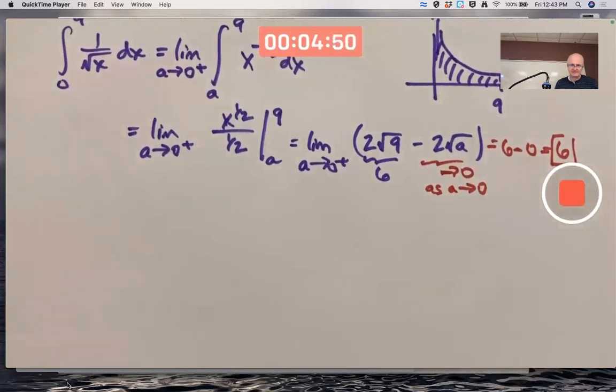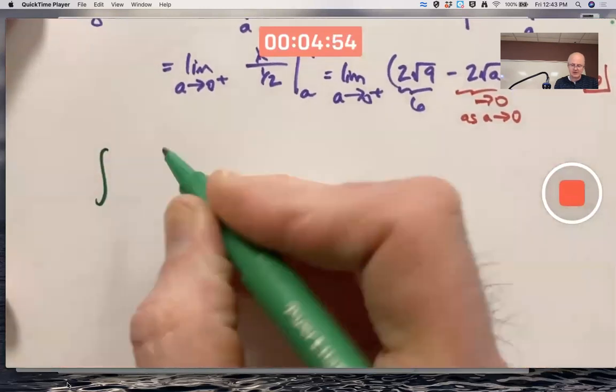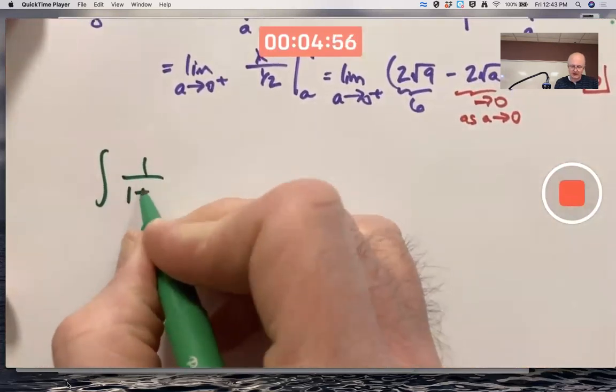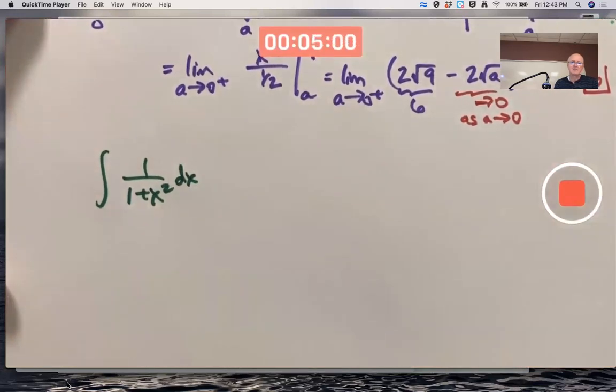Here's another example. We're going to integrate 1 over 1 plus x squared. That function has no vertical asymptotes for real values of x. I could certainly integrate it from 0 to infinity, for example, and see if it converges.